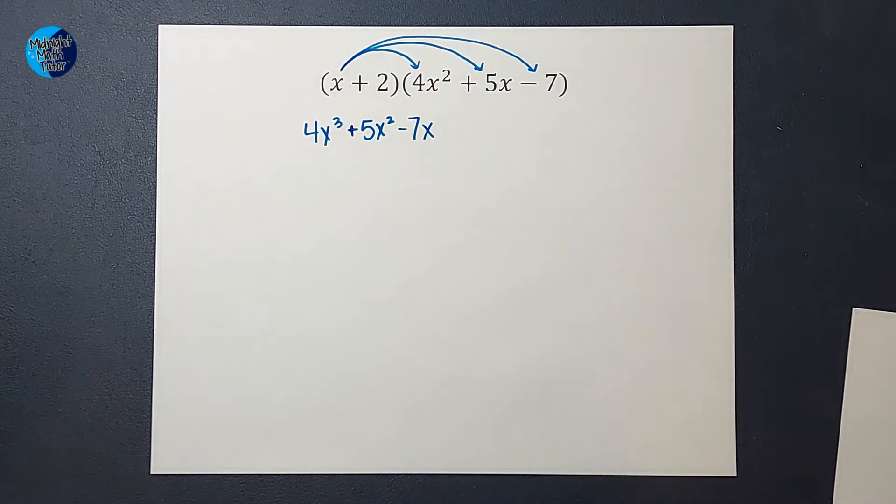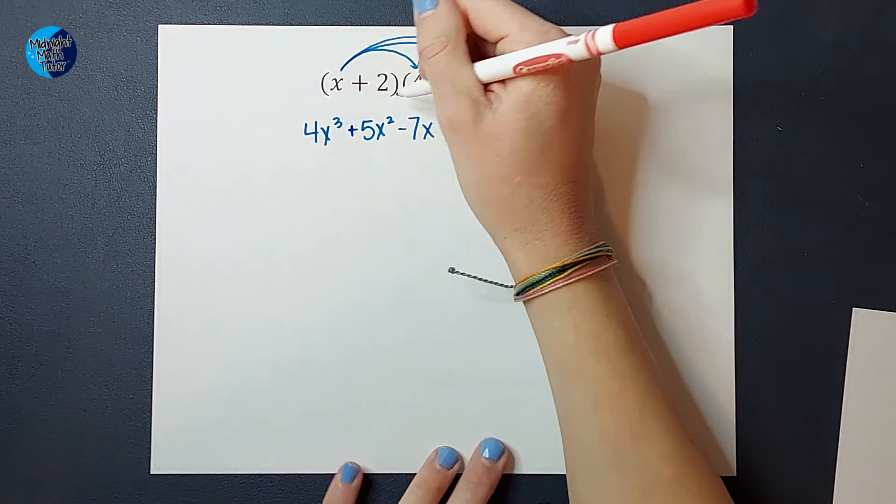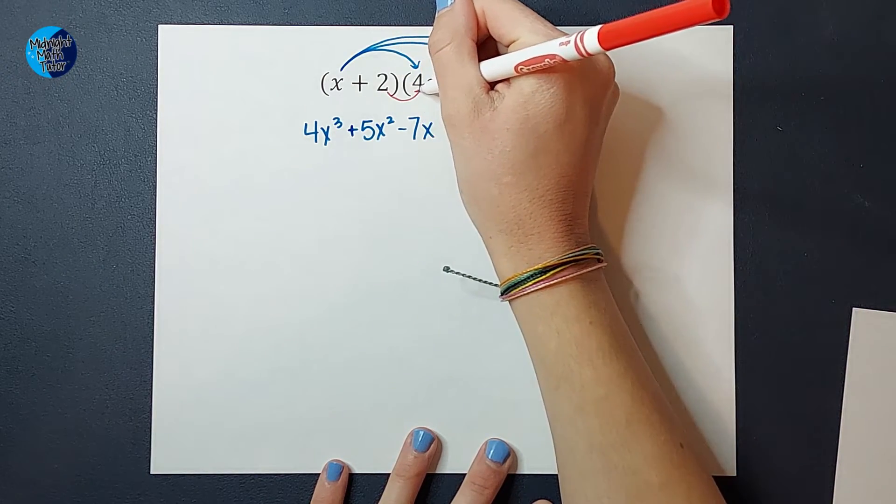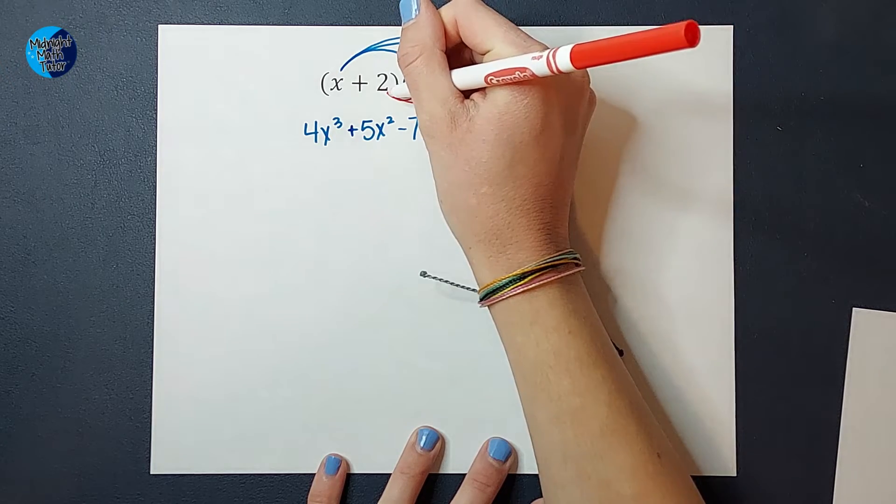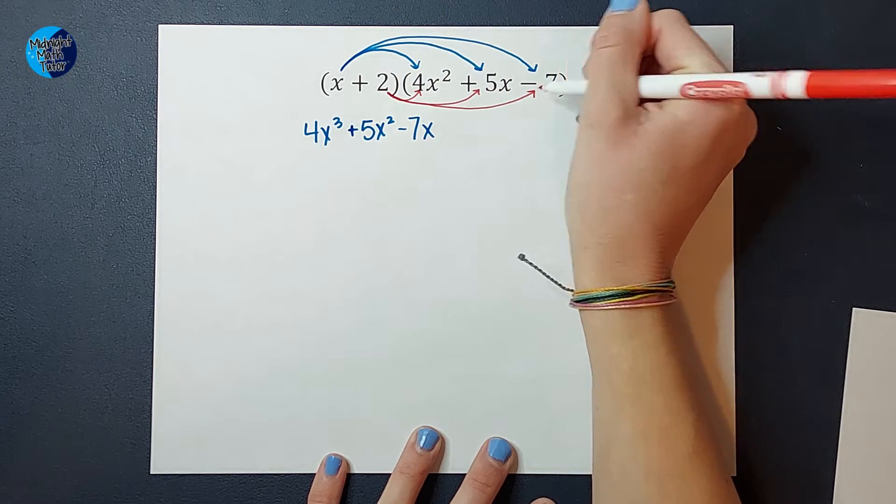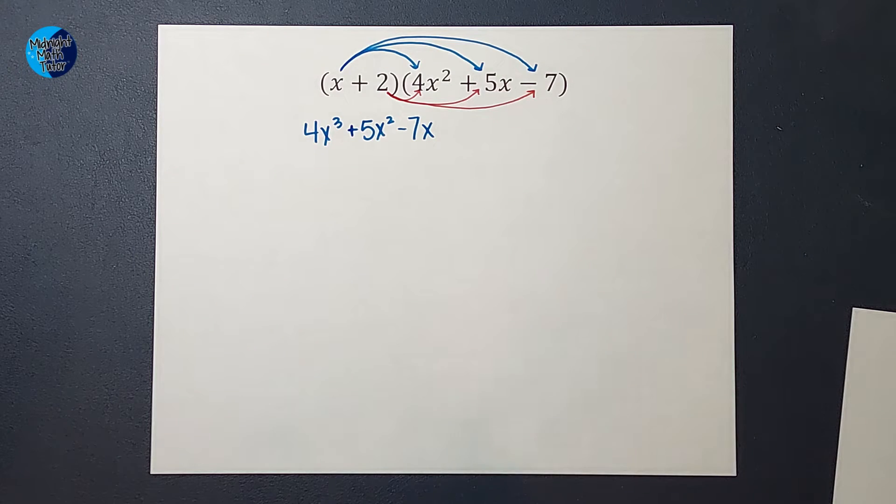It'd be cool if I was done, but I'm not. We can't forget about this two. This two needs to be multiplied times the 4x squared times the 5x and times the negative 7. Is this sometimes a long process? Sometimes it is.